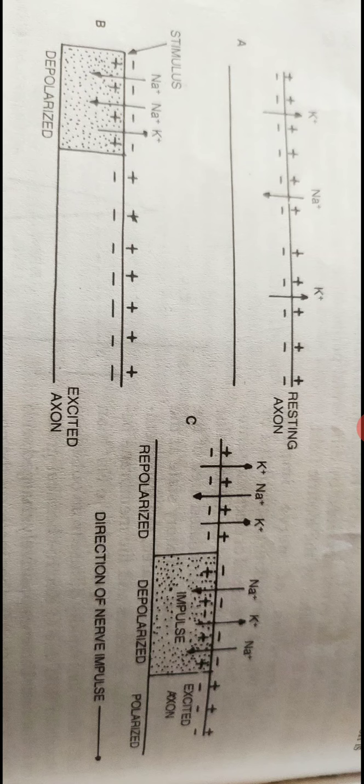The part of refractory period in which the nerve fiber is not able to give response to a stimulus of any strength is called absolute refractory period. No matter how strong the stimulus, the nerve fiber will not respond.